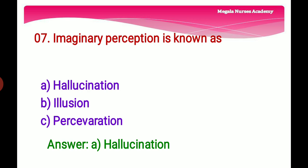Seventh question: Imaginary perception is known as — Option A: Hallucination, a perception of having seen, heard, touched, tasted, or smelled something not actually there. Option B: Illusion, a wrong or misinterpreted perception of a sensory experience. Option C: Perseveration, a continuation or recurrence of experience without appropriate stimulus. The right answer is Option A, hallucination.